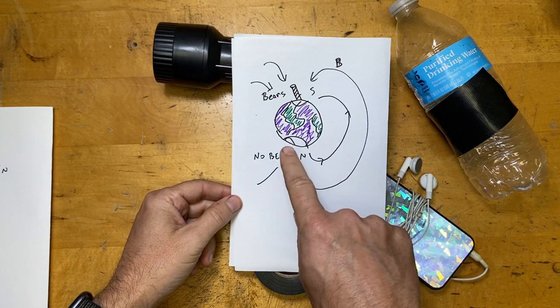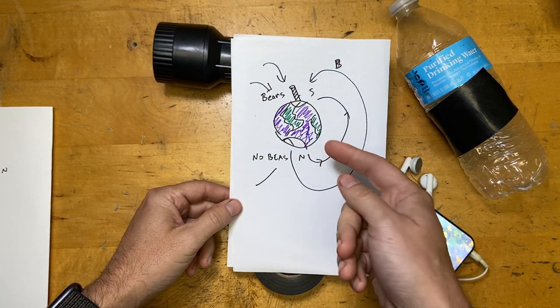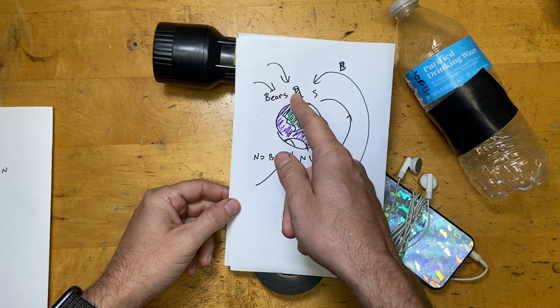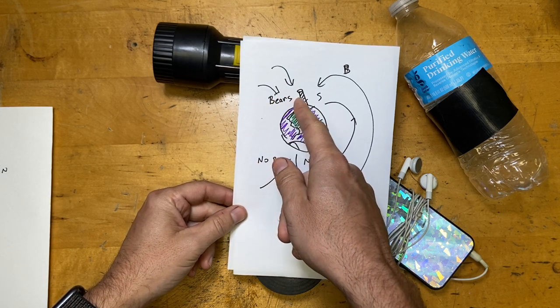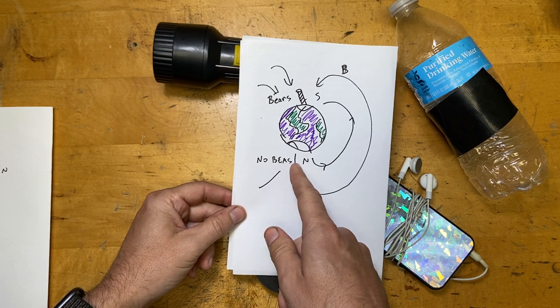This is the earth and the earth makes a magnetic field. So this is the North Pole, that's where Santa Claus lives, that's why there's a big pole up there. And this is also bears, bears up here, right? That's spelled wrong. No bears, that's what Arctic means.